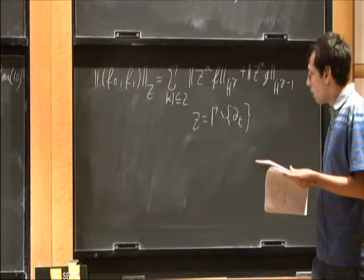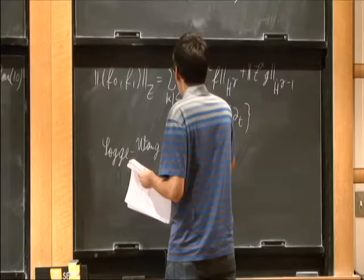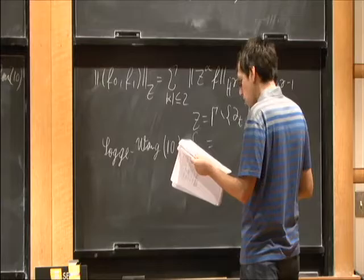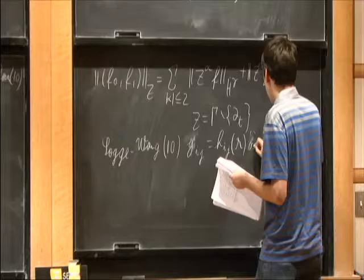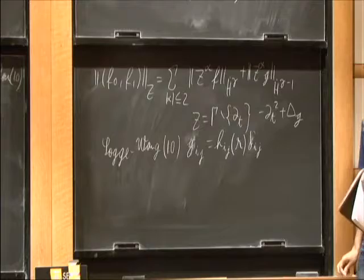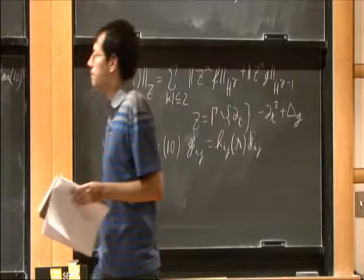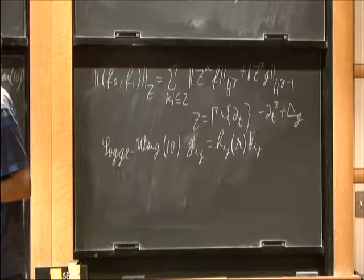Let me finish this introductory part by saying that Sogge and Wang, along similar lines, were able to prove this for metrics that were conformal to the Minkowski metric with a radial conformal factor — that is, metrics that look like minus dt^2 plus g_{ij} delta_{ij} where g is radial.